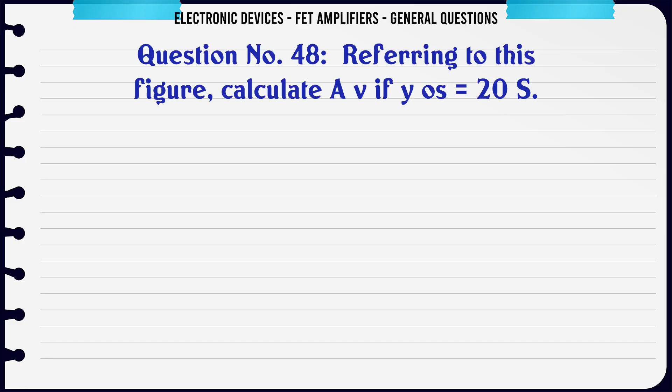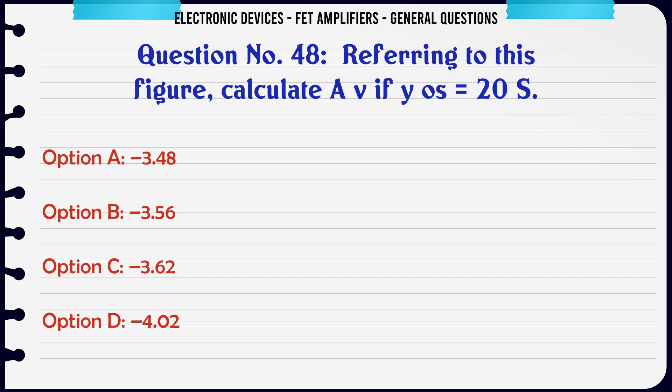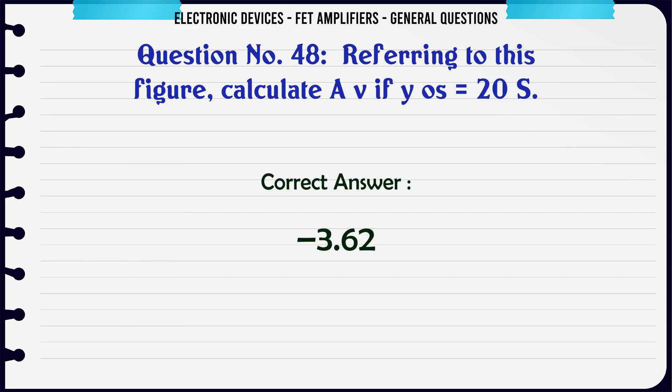Referring to this figure, calculate AV for YOS = 20µS. A. 3.48. B. 3.56. C. 3.62. D. 4.02. The correct answer is 3.62.